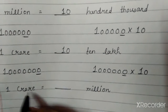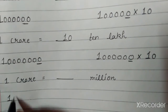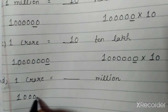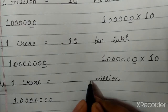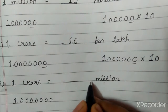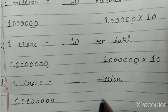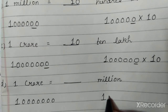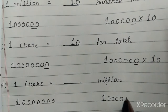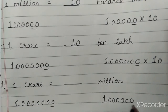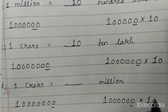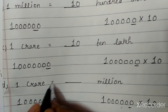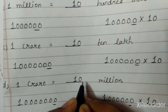Part D: 1 crore is equal to dash million. 1 crore has 7 zeros — 1, 2, 3, 4, 5, 6 and 7. And 1 million has 6 zeros — 1, 2, 3, 4, 5 and 6. Here there are 7 zeros and here there are 6 zeros, so we have to multiply by 10. That means 1 crore is equal to 10 millions.